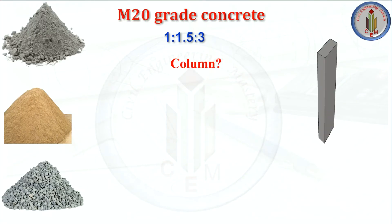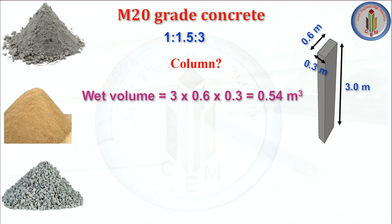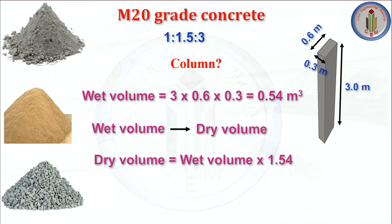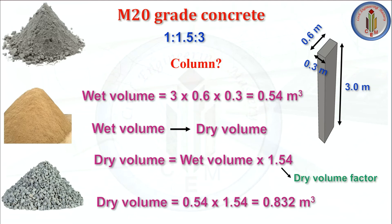Next, let us calculate for column. Depth of the column is 0.6 meter, width is 0.3 meter and height is 3 meter. Volume of concrete equals 3 multiplied by 0.6 multiplied by 0.3, giving a wet volume of 0.54 meter cube. Converting to dry volume by multiplying by the dry volume factor 1.54, we get dry volume of 0.832 meter cube.